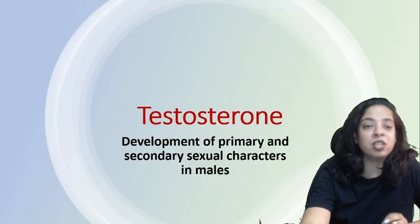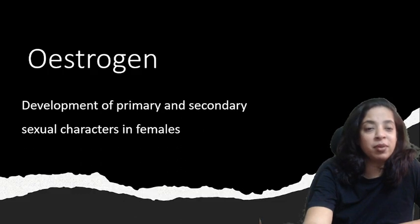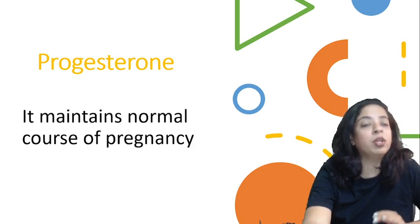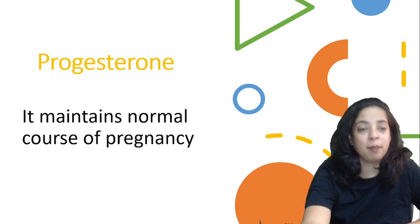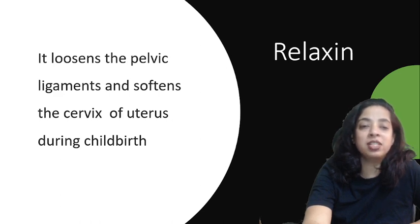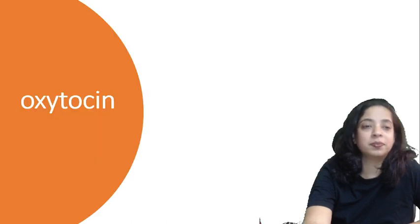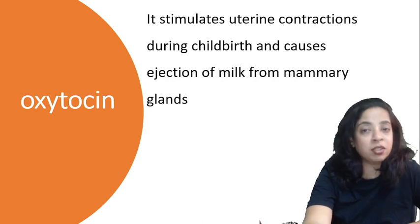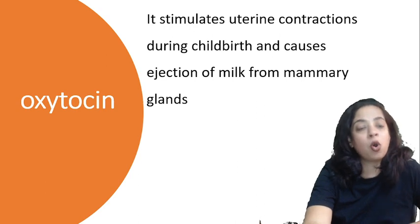Remember: testosterone is in males, estrogen is in females. What is progesterone? Progesterone maintains the normal course of pregnancy. What is the function of relaxin? It loosens the pelvic ligaments and softens the cervix of the uterus during childbirth. What is the function of oxytocin? It stimulates uterine contractions during childbirth and causes ejection of milk from mammary glands. These are the two basic functions of oxytocin.